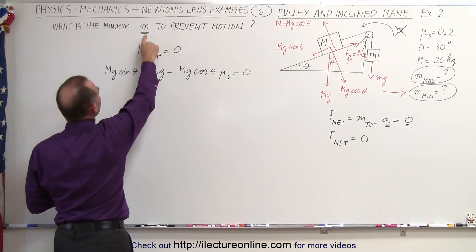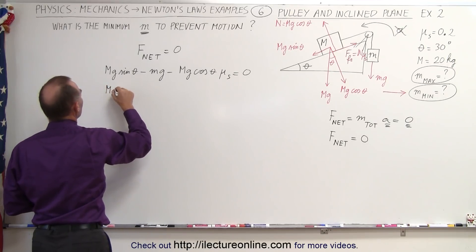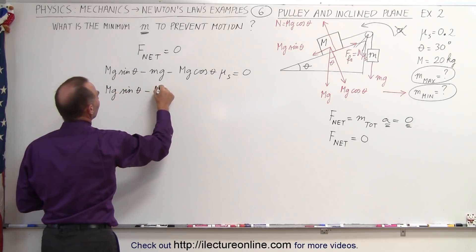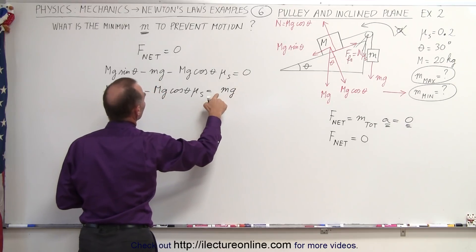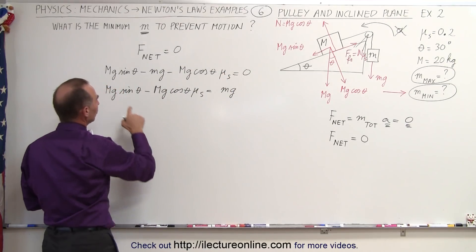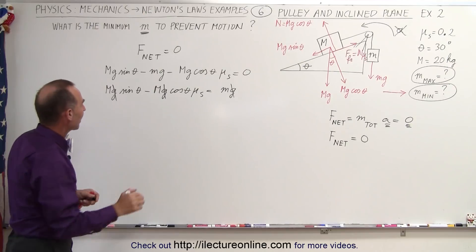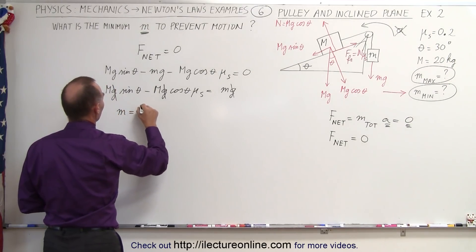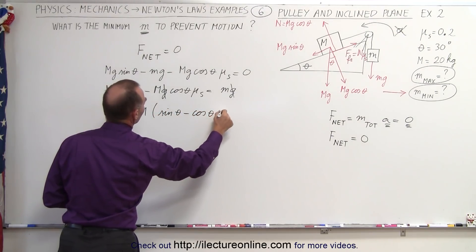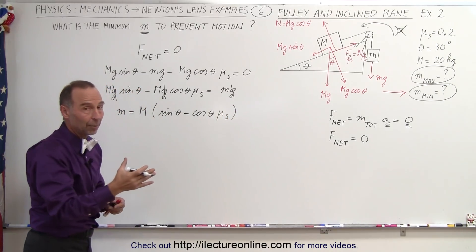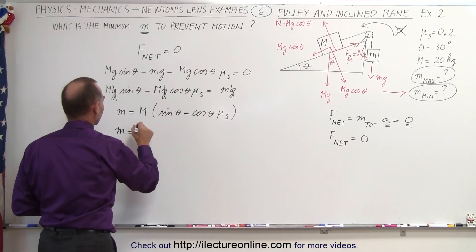We're looking for the mass to prevent the motion, so we move little mg to the other side. We get: Mg sine of theta minus Mg cosine of theta times mu sub s equals little mg. Every term has a g in it, so g cancels everywhere. Factoring out big M gives: little m equals M times the quantity sine of theta minus cosine of theta times mu sub s. The difference from the previous example is that here we have a negative, where before we had a positive.